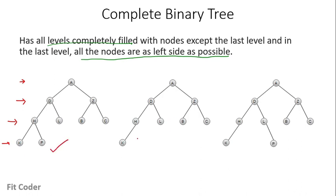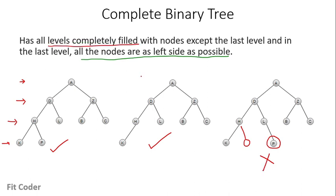In the second tree, in the last level the K node is as far left as possible, so this is also a complete binary tree. But in the third tree, in the last level the P node is not as far left as possible because there is an empty space to its left. So this third tree is not a complete binary tree.